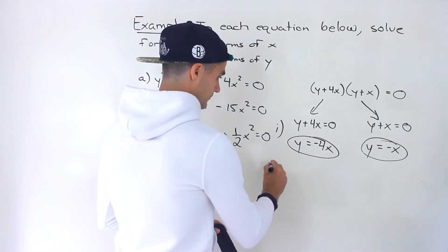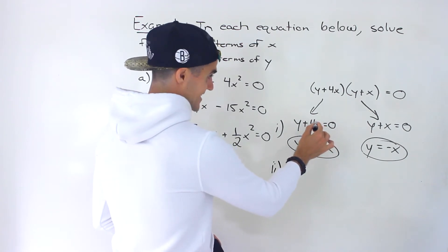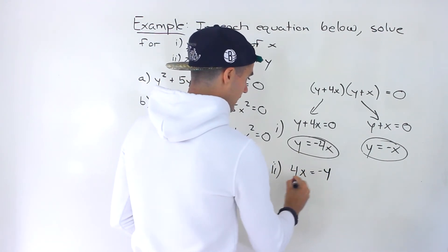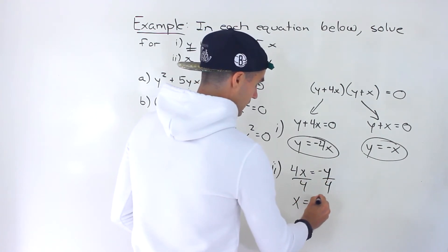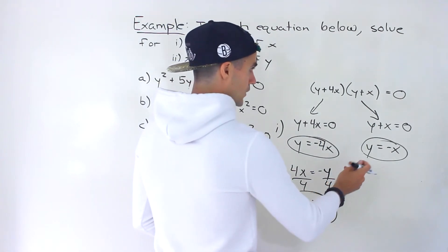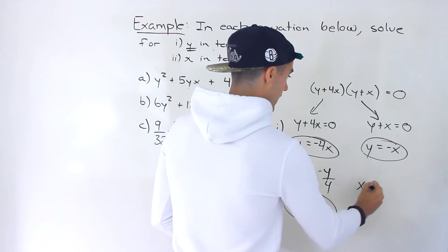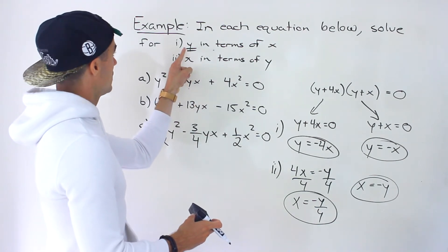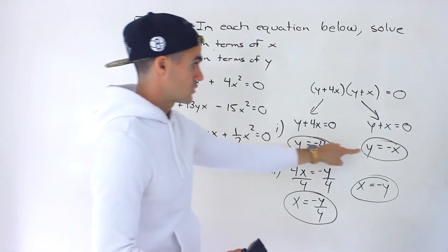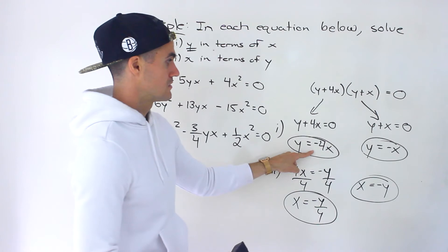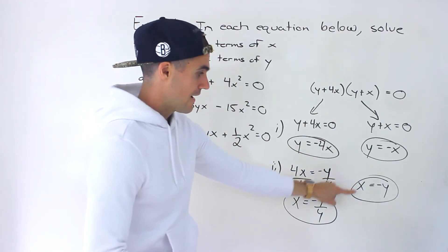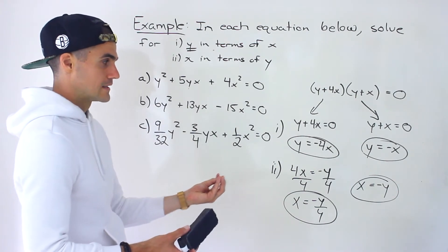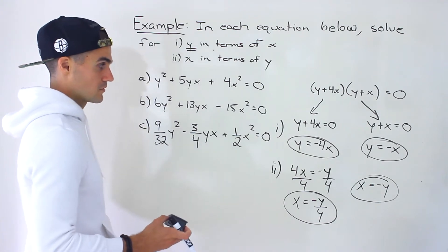Now if we write the solutions as x in terms of y, we isolate for x. From y plus 4x equals 0, we bring y over to get 4x equals negative y, then divide both sides by 4, giving x equals negative y over 4. From y plus x equals 0, we bring y over to get x equals negative y. So if they're asking to solve for x in terms of y, those are the two solutions for part a.